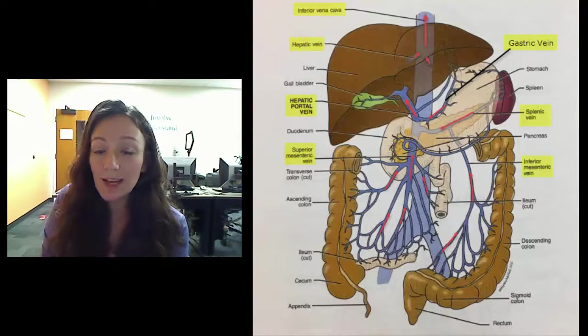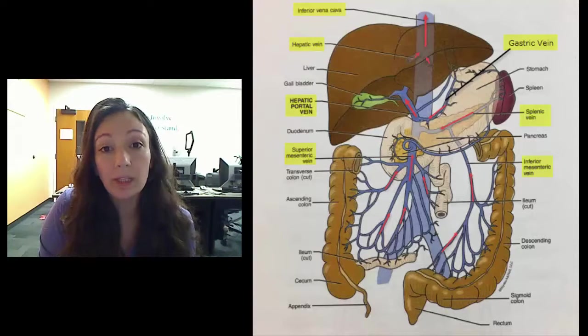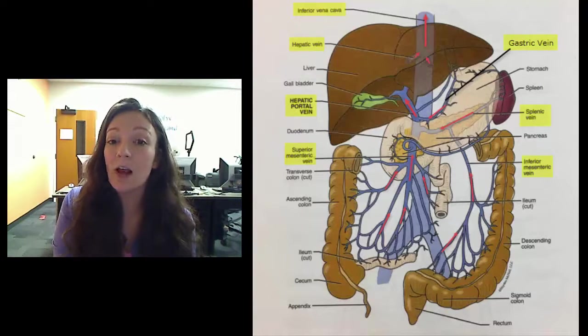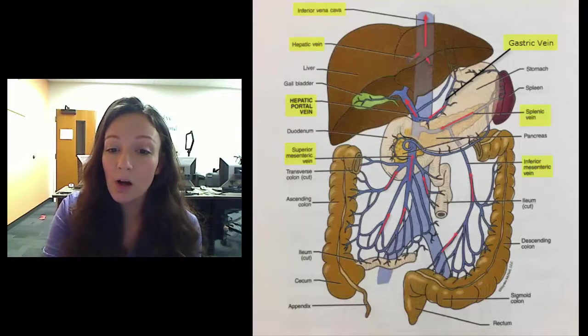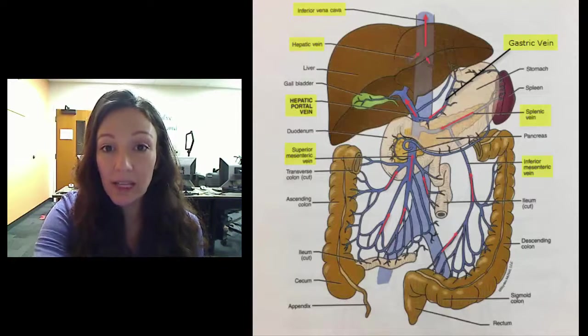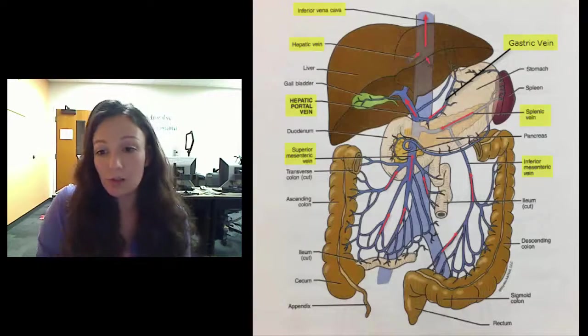So this is kind of different than some of our other venous systems. Like from the kidneys, blood goes directly from the kidneys back into the IVC, but not with these organs. All the blood from these organs is going to go first to the hepatic portal vein, then to the liver to be cleansed, and then into the IVC, then back into the general circulation.